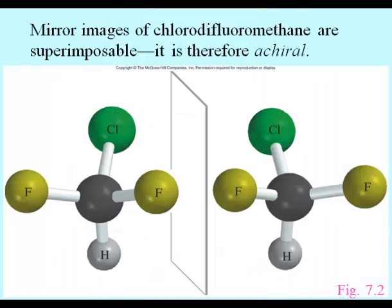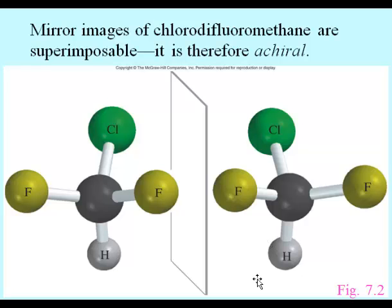It is important that the four attachments to the carbon be different. Here's a case where we've got a molecule with two fluorines — chlorodifluoromethane. It does have a mirror image, but in this case that mirror image is perfectly superimposable. We could slide these two molecules on top of each other and everything would match up. So we would say in this case the molecule is not chiral — the other term for that is achiral.